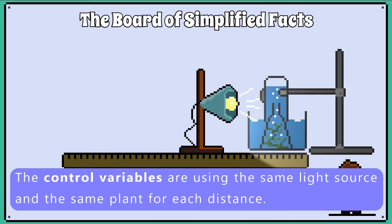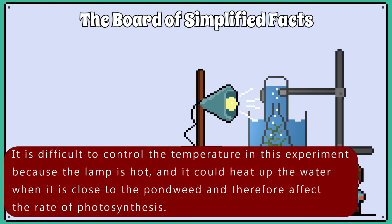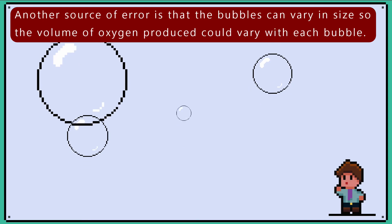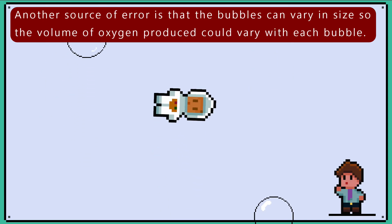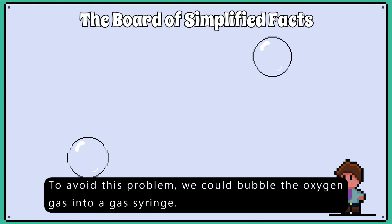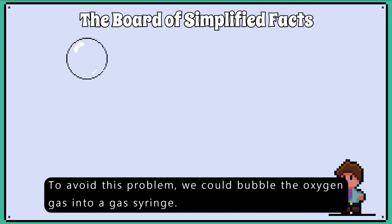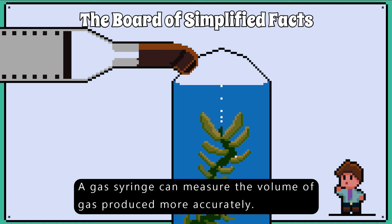The control variables are using the same light source and the same plants for each distance. It is difficult to control the temperature in this experiment because the lamp is hot and it could heat up the water when it is close to the pondweed, therefore affecting the rate of photosynthesis. Another source of error is that the bubbles can vary in size, so the volume of oxygen produced could vary with each bubble. To avoid this problem, we could have the bubbles collected into a gas syringe, which can measure directly the volume of oxygen produced.